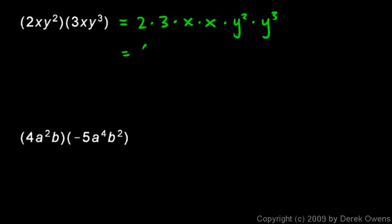2 times 3 gives me a 6. The x times x gives me an x squared. And the y squared times y cubed gives me a y to the fifth. And that's my answer, 6x squared y to the fifth.